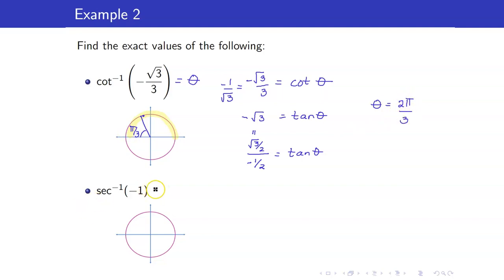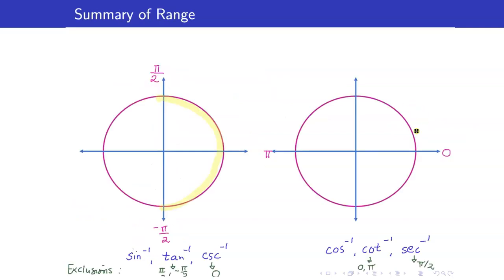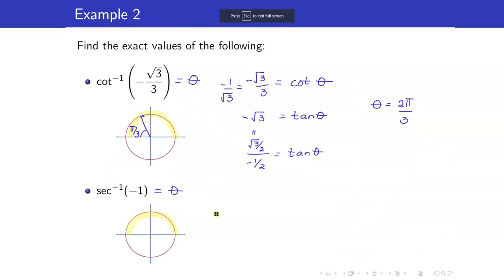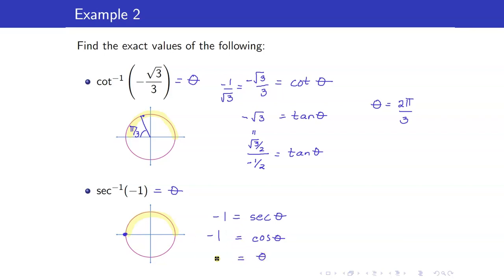Next, we have secant inverse of negative 1. For secant inverse, the angle must be between 0 and pi. This means secant of theta equals negative 1, or equivalently cosine theta equals negative 1. That occurs at theta equals pi.